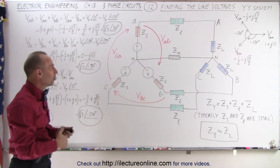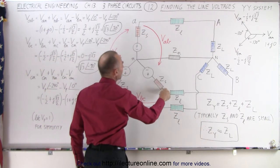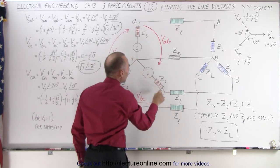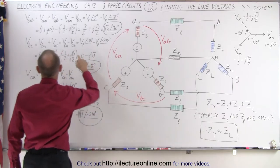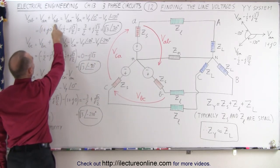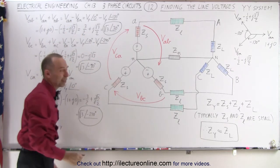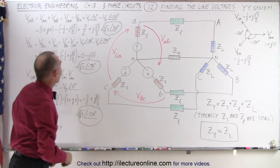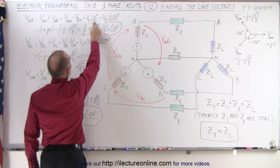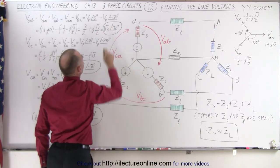To find the voltage from A to B, we add the voltage from A to N plus the voltage from N to B. So the voltage from A to B equals the voltage of A to N plus the voltage from N to B, which is the same as the negative of the voltage of B to N. We add the phase voltage at a zero degree angle and subtract from that the phase voltage at a minus 120 degree angle.